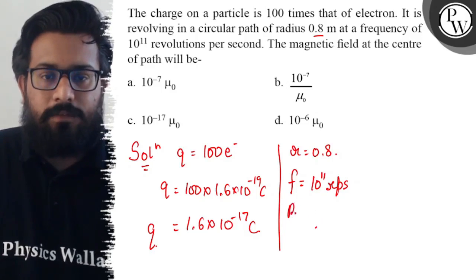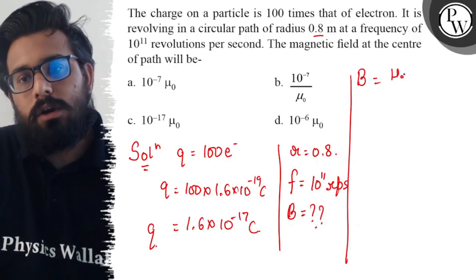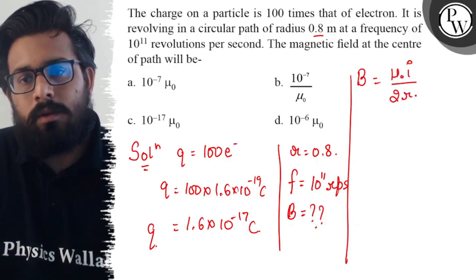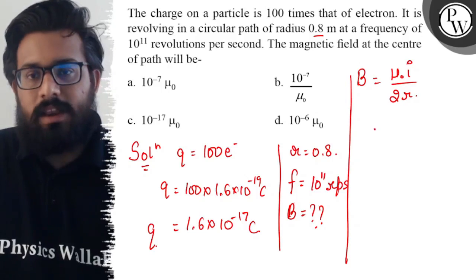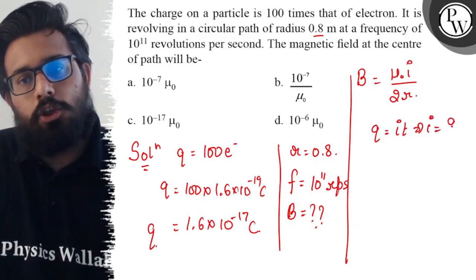The value of B at the center is μ₀I upon 2πr. We know the relation that q equals It, so I can be written as q by t, and one upon time is actually the frequency.